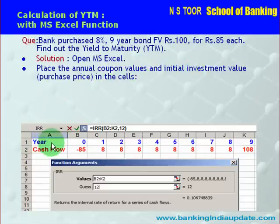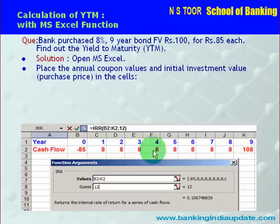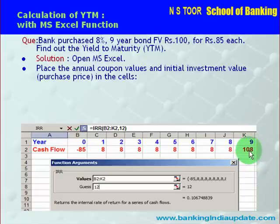So here we are giving the years: year 0, year 1, 2, and so on up to 9. And here we have the cash flows. First is the investment, which is a cash outflow, so it will be expressed as minus 85. All the remaining entries, starting at the end of the first year, are cash inflows — the money the investor is going to receive. The first year coupon is Rs 8, the second year coupon is Rs 8, and so on. In the 9th year, along with Rs 8, the investor will get back the face value of the bond — hence Rs 108.